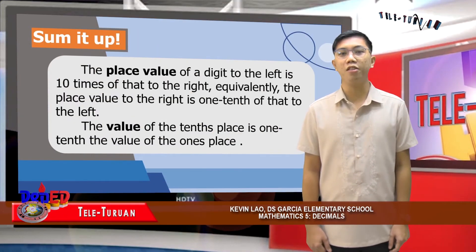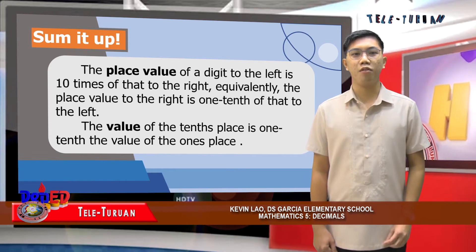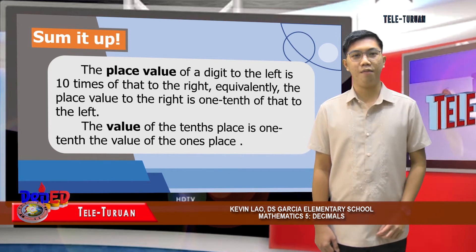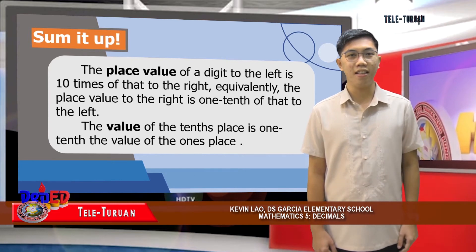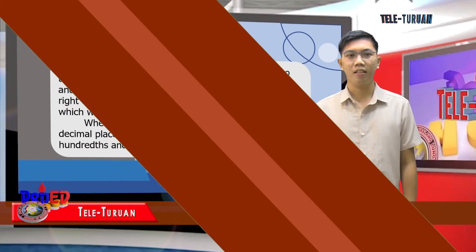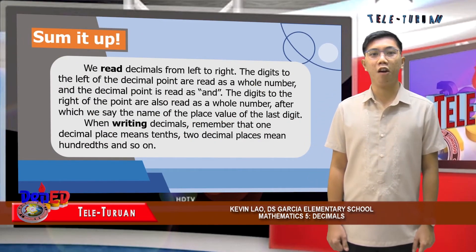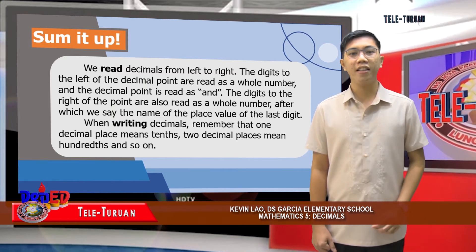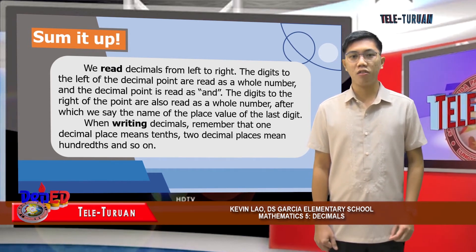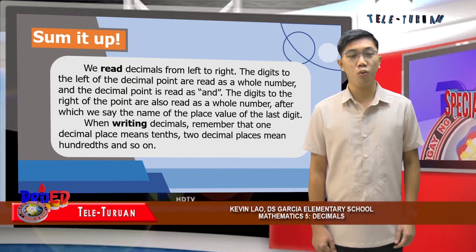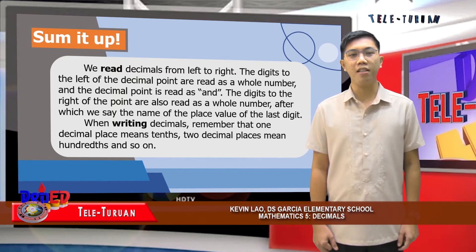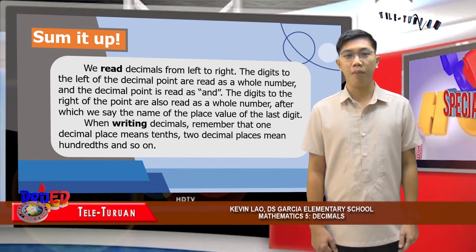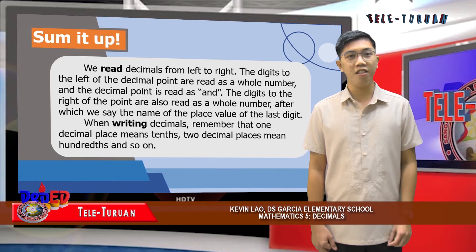To sum it up: the place value of a digit to the left is ten times that of the digit to the right. Equivalently, the place value to the right is one-tenth of that to the left. The value of the tenths place is one-tenth the value of the ones place. Also, we read decimals from left to right. The digits to the left of the decimal point are read as a whole number, and the decimal point is read as "and." The digits to the right of the point are also read as a whole number, after which we say the name of the place value of the last digit. When writing decimals, remember that one decimal place means tenths, two decimal places mean hundredths, and so on.